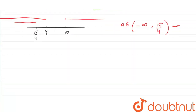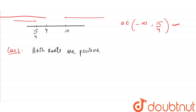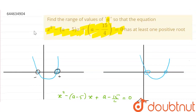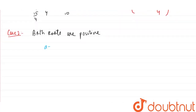Case 2 is when both roots are positive. For this, the parabola will have both roots on the positive side. Therefore, the product of roots will be positive, meaning A minus 15/4 is greater than 0. From this, we get A is greater than 15/4.